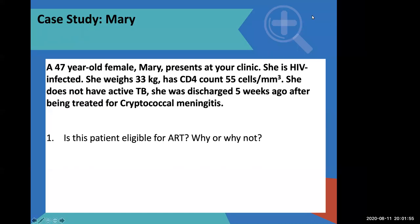So Mary is a 47-year-old female who presents to you. She is HIV infected. She weighs 33 kgs. Her CD4 count is 55 cells. She does not have active TB. She was discharged five weeks ago after being treated for cryptococcal meningitis. So you are seeing her five weeks after discharge. She was admitted for cryptococcal meningitis.